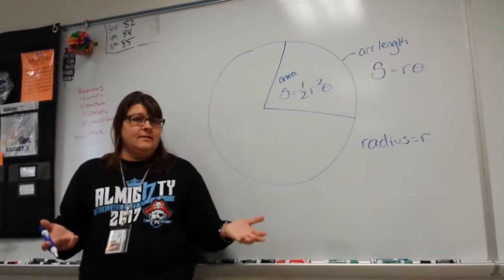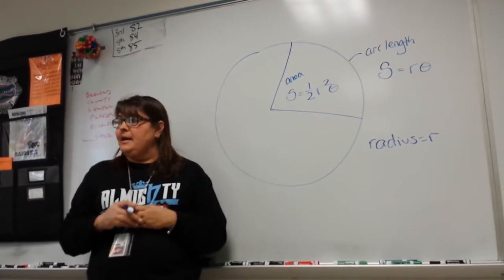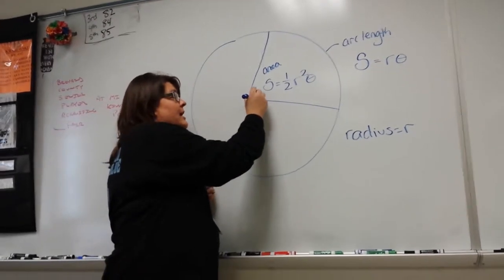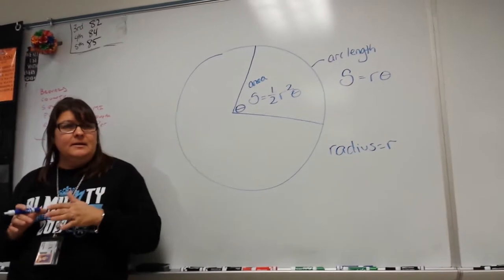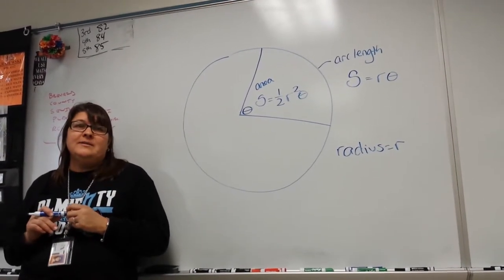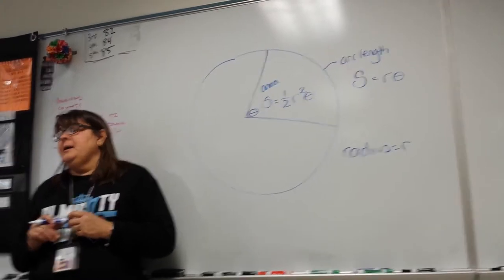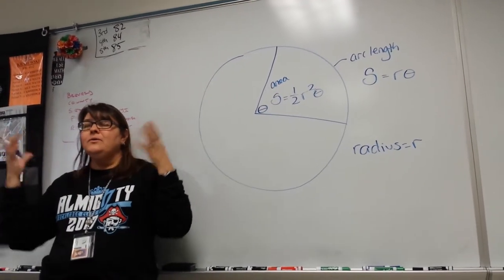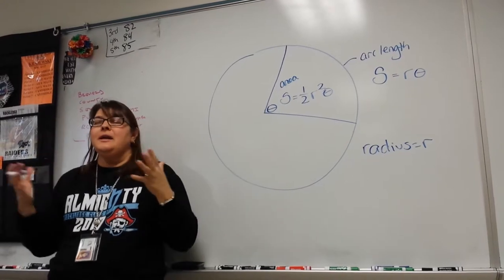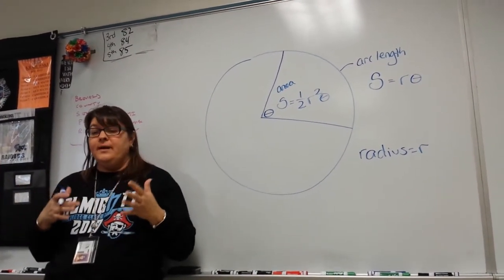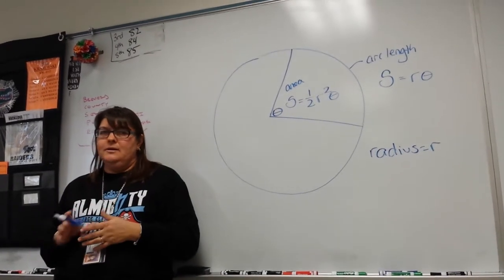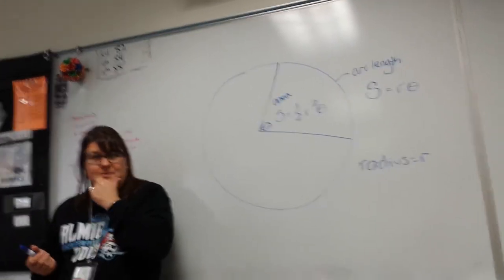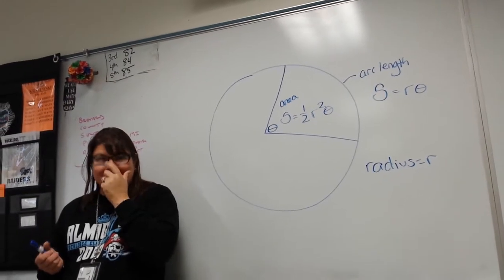That's not terribly difficult — we understand R. Now, what about theta? It's the angle — the point of that piece of pizza. That's what we call our reference angle. Sometimes you'll be given theta; sometimes you will not. If you don't have the value of theta and need to find it, how would we have done it in geometry? You would use SOHCAHTOA — sine, cosine, tangent — you know that sine over cosine.